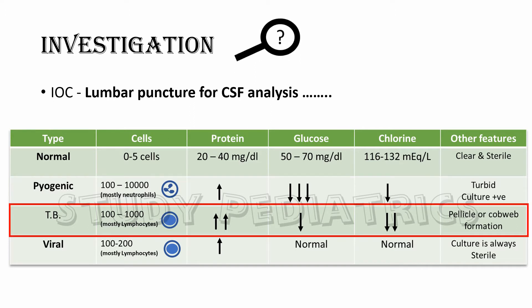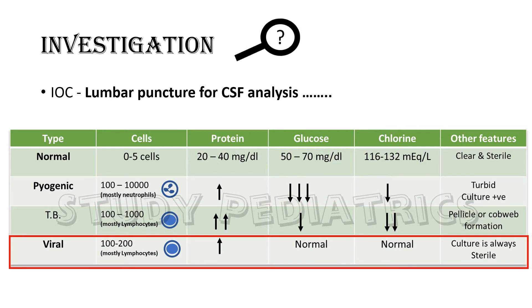In the tuberculosis picture, cells lean more toward chronic inflammation, that is lymphocytes, which we can relate to TB being a chronic disease. Proteins are increased as usual, and glucose is decreased. A characteristic layer of pellicle appears, also known as the cobweb appearance.